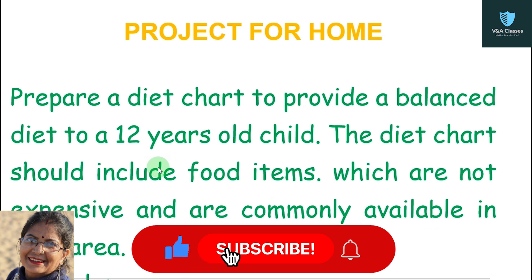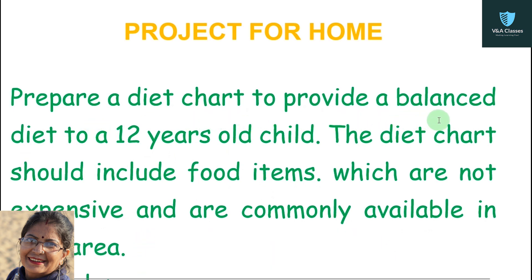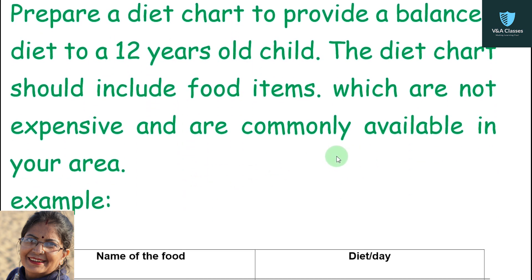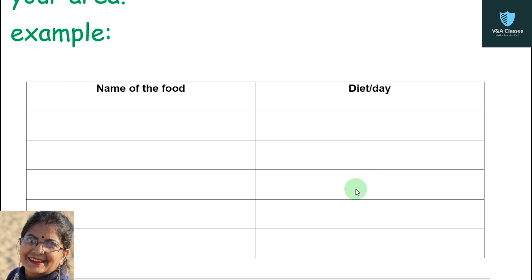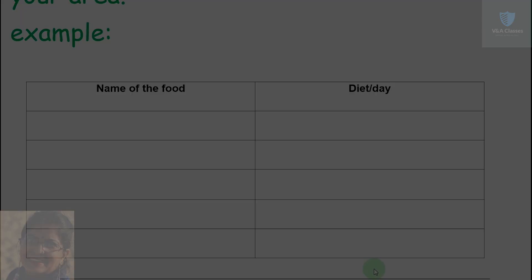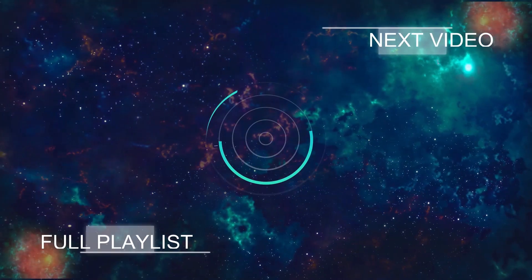If you like the video, please like the video and subscribe. Now, your project: prepare a diet chart to provide a balanced diet to a 12-year-old child. The diet chart should include food items which are not expensive and are commonly available in your area. Fill in the table provided, and write your completed project in the comment section.